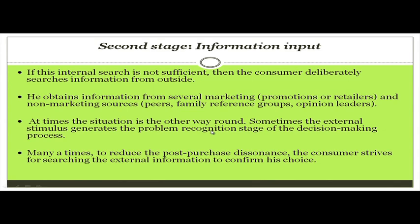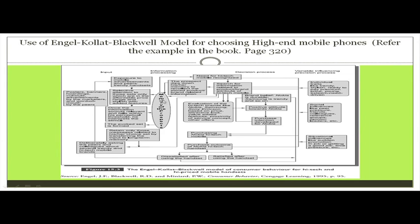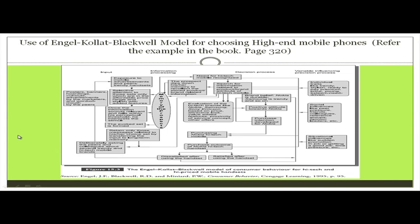Sometimes things go the other way round — an external stimulus can generate the problem. For instance, being exposed to an ad for the Apple iPhone 7 or Samsung's new water-resistant series may make you feel the need to change your handset. Also, if you have purchased a product and are not satisfied, you may search external information to confirm how other brands are performing and whether you should change your model.